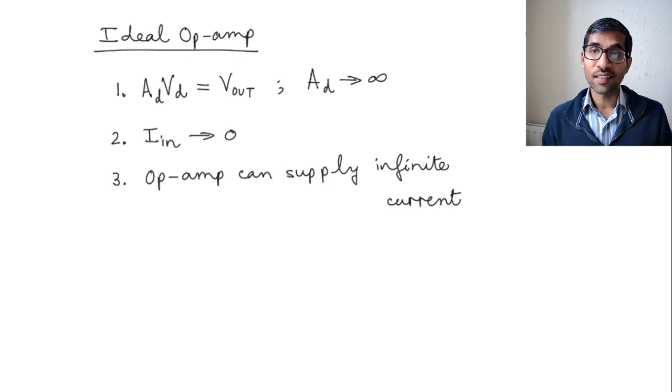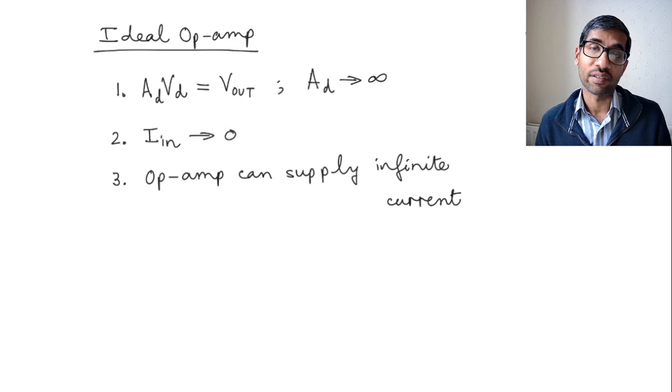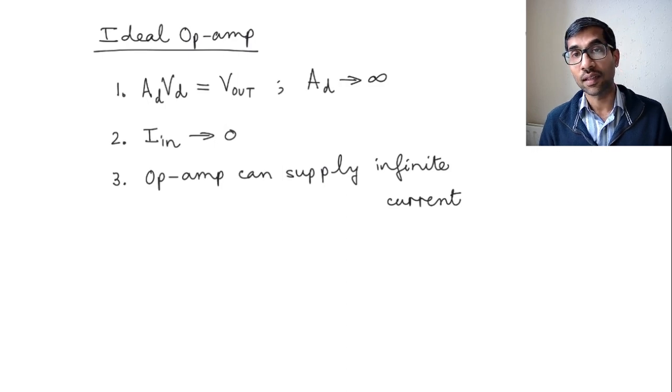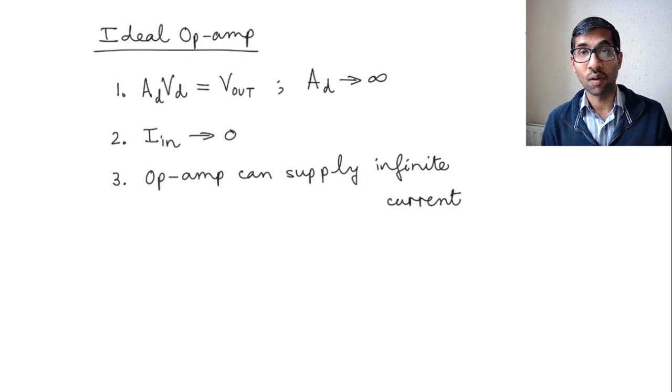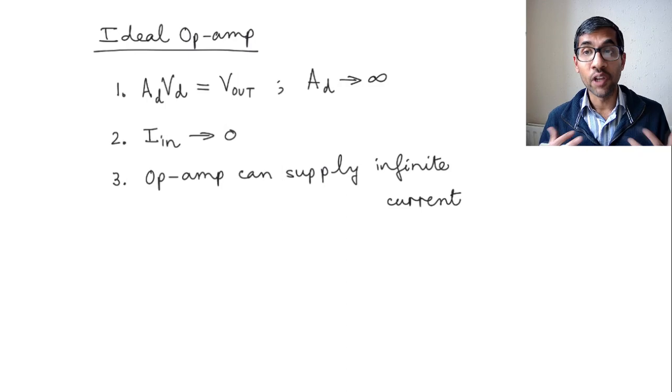As you can see, these are all ideal characteristics. Real op-amps differ from these ideal characteristics, and that is the subject of the first half of what we're going to be learning this week. We're going to be learning about non-idealities of the op-amp.